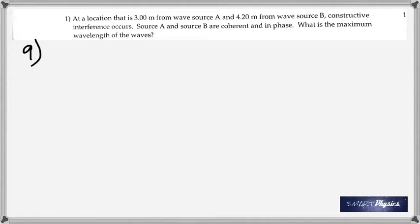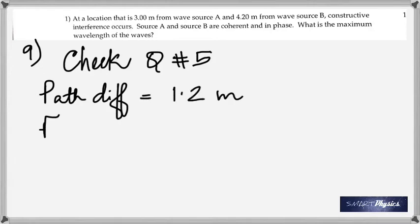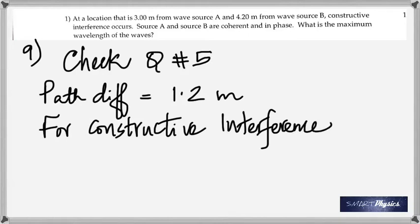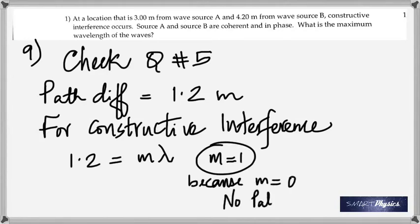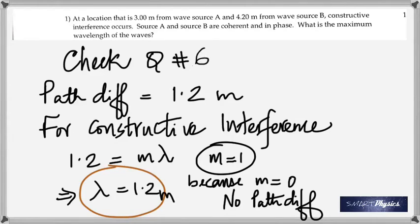Constructive interference takes place when the crest from one source falls exactly on the crest from the other source, which means the path difference between them should be an integral multiple of the wavelength. So the condition for constructive interference is the path difference is m lambda. The path difference is one point two meters, which is the difference between four point two and three. For constructive interference, the path difference must be m times lambda where m is zero, one, two, three, four. In this case, m is one because if m is zero then there's no path difference. So from there we see that lambda is 1.2 meters.